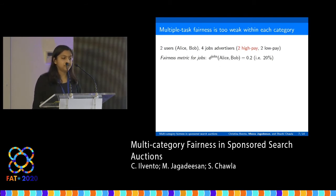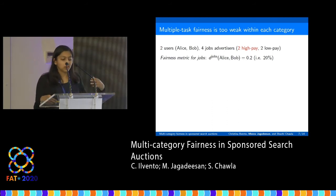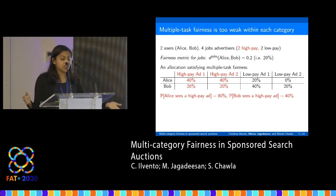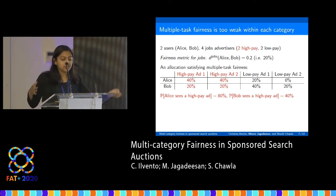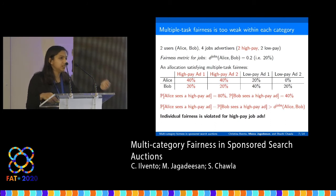Within each category, multiple task fairness has the opposite problem. Consider four job advertisers — two for high-paying jobs and two for low-paying jobs — and two users who are relatively similar for the jobs metric but not identical, requiring their difference in probabilities to be at most 20%. An allocation satisfying multiple task fairness could assign Alice a 40% chance of seeing each of the two high-paying job ads and Bob only a 20% chance. The issue is that these differences compound: Alice sees a high-paying job ad with a much higher probability than Bob. Intuitively, individual fairness is violated for the subcategory of high-paying jobs.